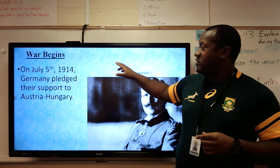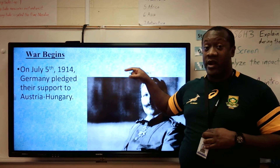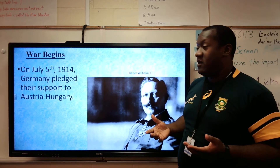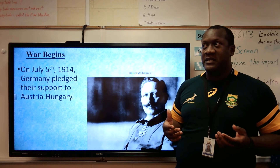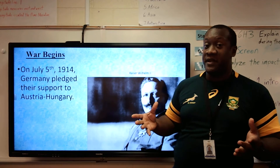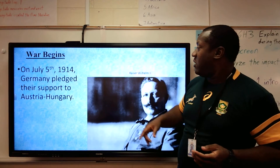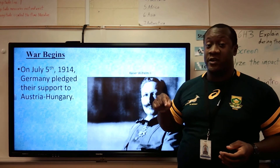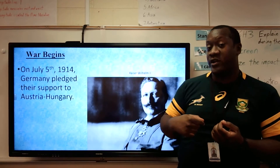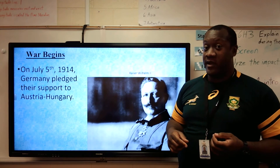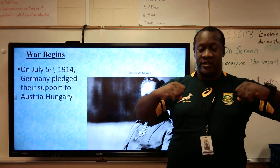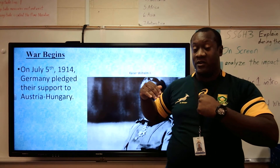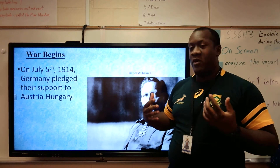On July 5th, 1914, Germany pledged to support Austria-Hungary. Austria-Hungary wants to attack Serbia. But Serbia has an ally, and that ally is Russia. There's a problem — Austria-Hungary can beat Serbia, but Serbia and Russia together is going to be a little hard. Germany says: Austria-Hungary, we're pledging our support to you. If Russia declares war on you, we'll jump to your defense. So it's starting to get a little bit complicated. This is really a fight between Austria-Hungary and Serbia, but Serbia has an ally in Russia, and Austria-Hungary has an ally in Germany.